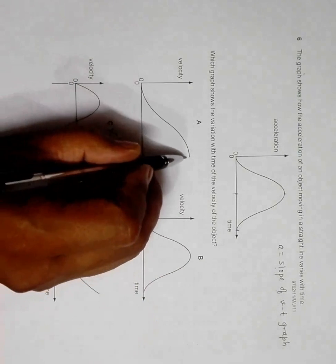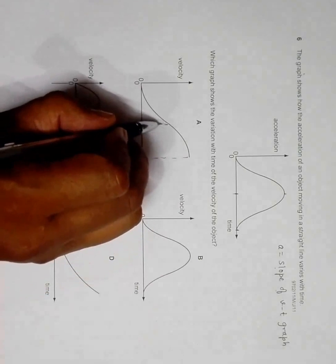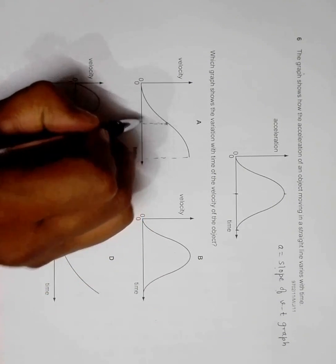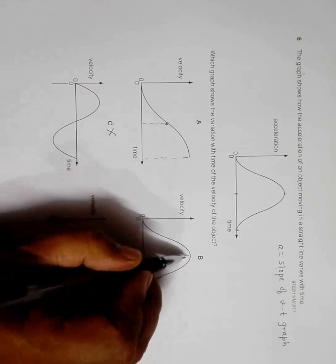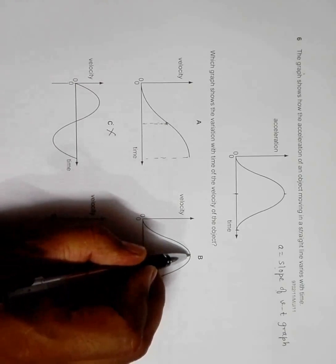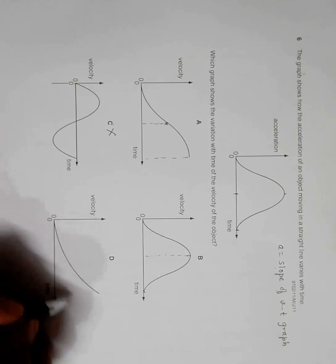If we think of this as the complete motion, this is the middle and definitely here the slope is the highest. If this is the whole motion, this is the middle of the motion and here the slope of VT graph is not high, it's equal to zero.